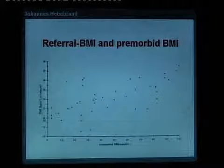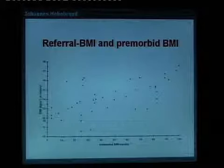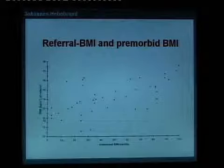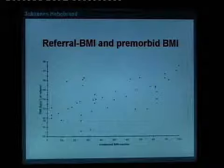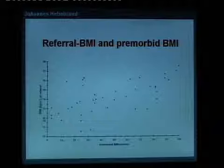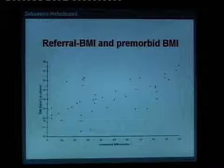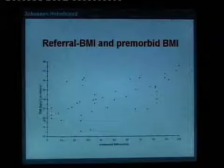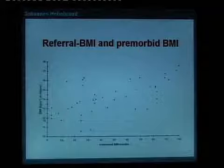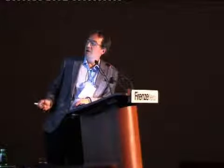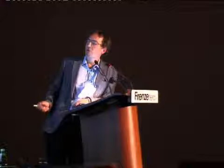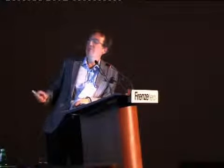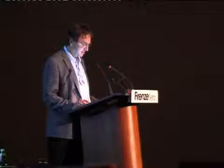There is quite a substantial correlation between BMI at referral and premorbid BMI centiles — around R = 0.6. Individuals who come in with a very low BMI tend to have had very low premorbid BMI centiles — these were premorbidly underweight individuals who, when they develop anorexia nervosa, end up with lower BMIs at referral. Conversely, individuals with high BMIs at referral stemmed from the overweight or obese weight categories prior to initiation of the eating disorder.